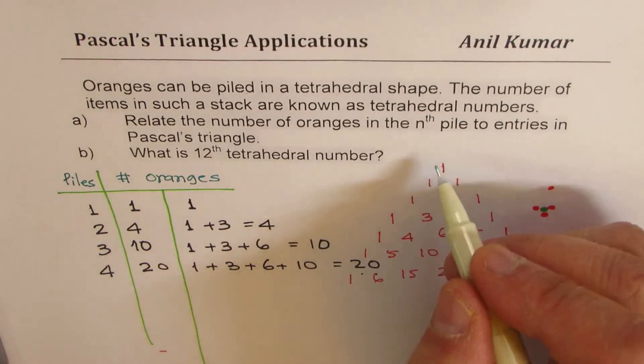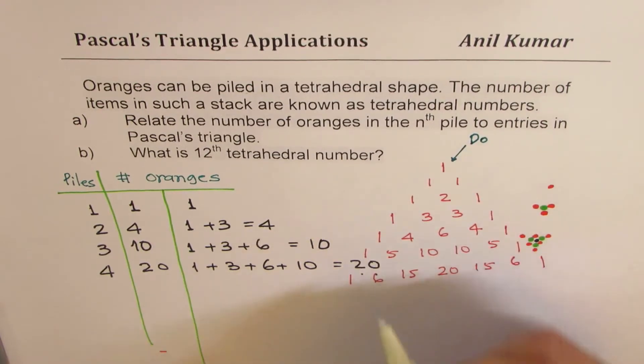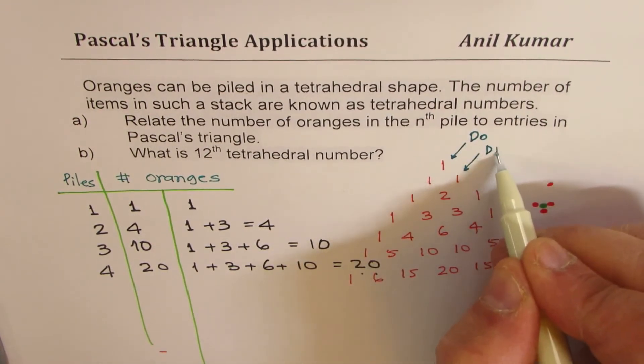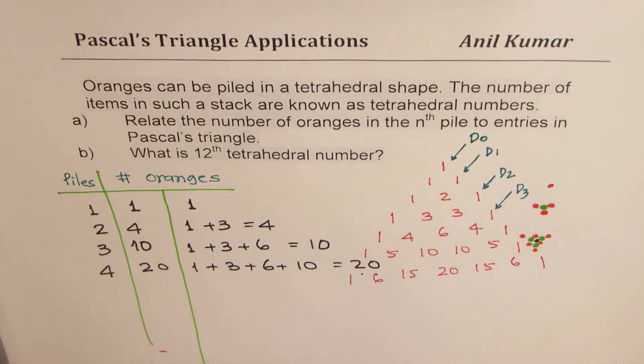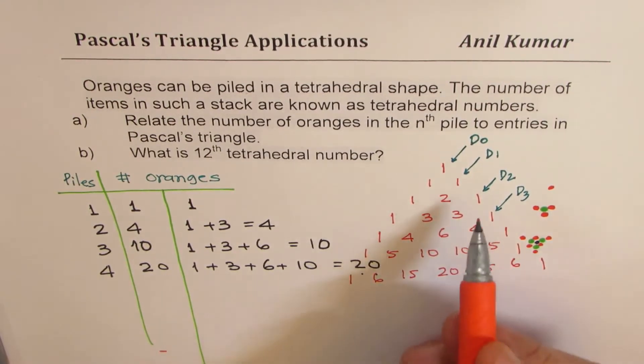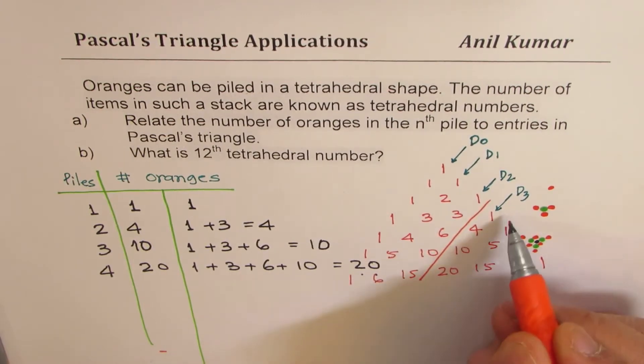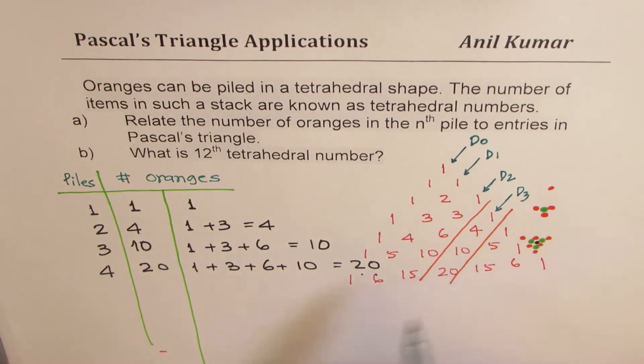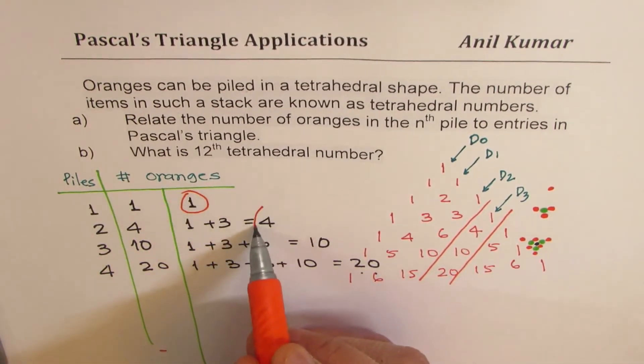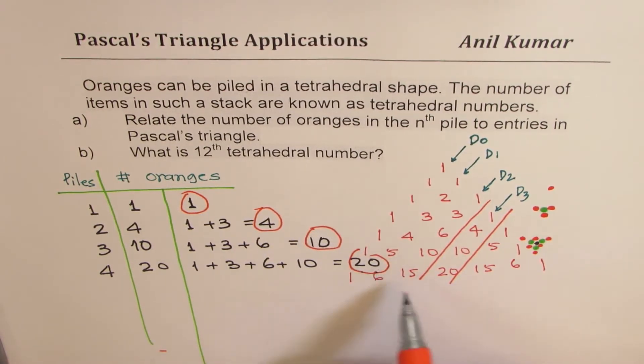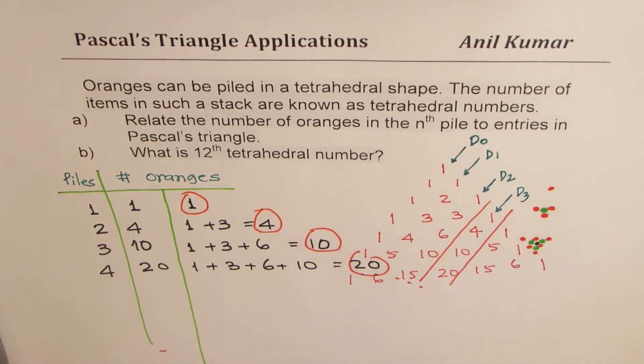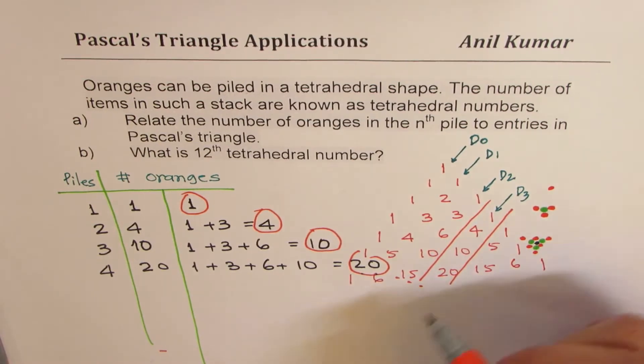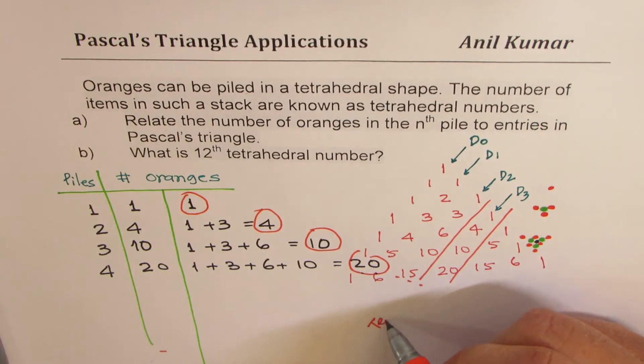Now you'll recall that we call this as our diagonal zero. This is our diagonal zero. And this is our diagonal number one. That is diagonal number two. This is diagonal number three. Now if you look into the third diagonal, then the numbers are one, four, ten, twenty. So these numbers are one, four, ten, twenty, and so on. Now that is the diagonal which has all the tetrahedral numbers.